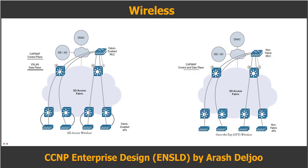There are two methods of integrating wireless into an SD Access network. The preferred method, referred to as fabric mode wireless, extends SD Access benefits for wired users over to wireless users. The alternative method is Over-The-Top, or OTT, which uses the traditional Cisco Unified Wireless local mode configuration for wireless access.